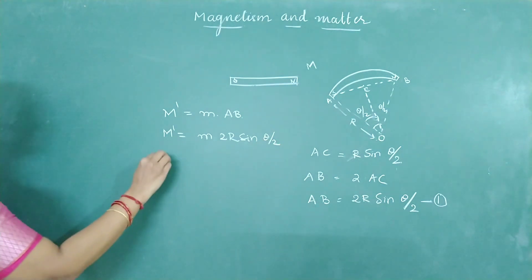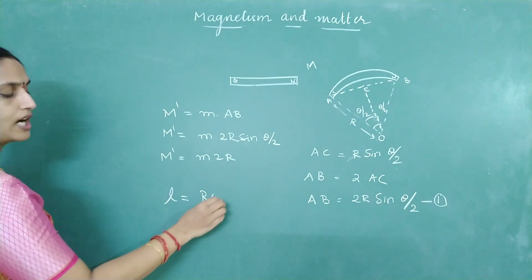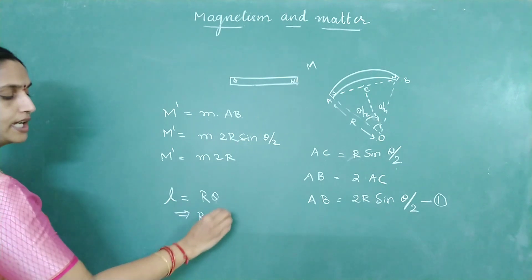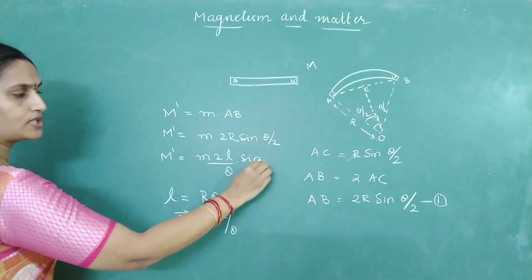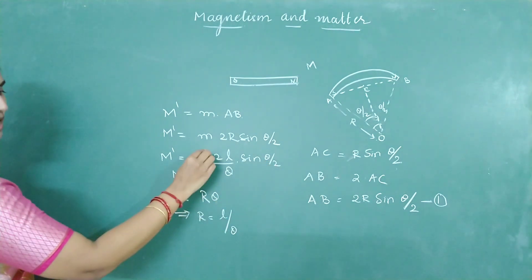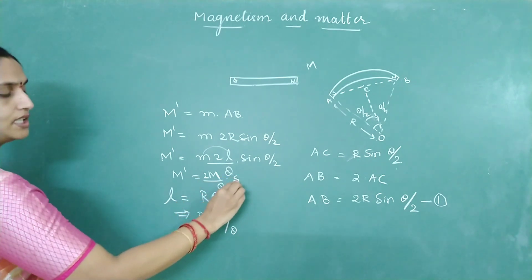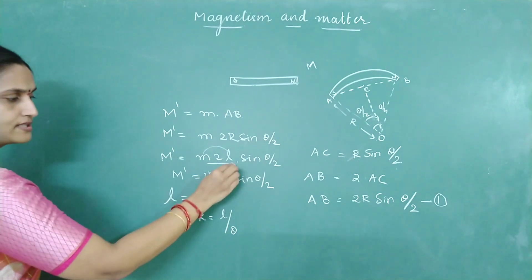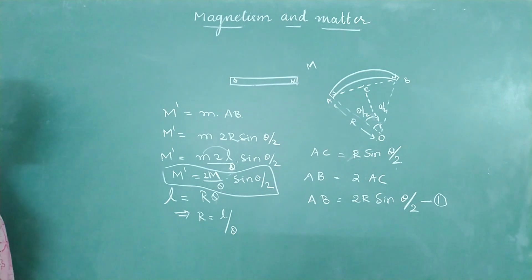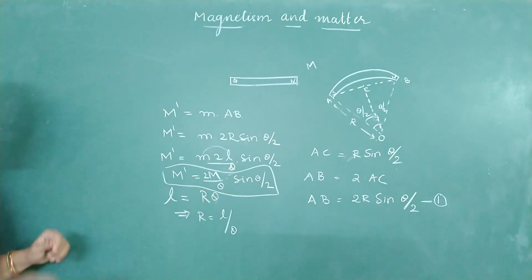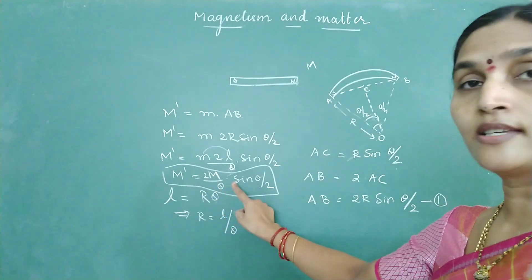Since radius is not given, we can write R equal to L divided by theta, because L equals R into theta. So replacing the radius as L by theta, the new magnetic moment becomes m into 2 times L by theta into sine theta by 2. Since M equals m into L was the previous magnetic moment, the new magnetic moment M dash equals 2M by theta into sine theta by 2. If a magnet is bent in the form of an arc subtending an angle theta, then the new magnetic moment is 2M by theta into sine theta by 2.